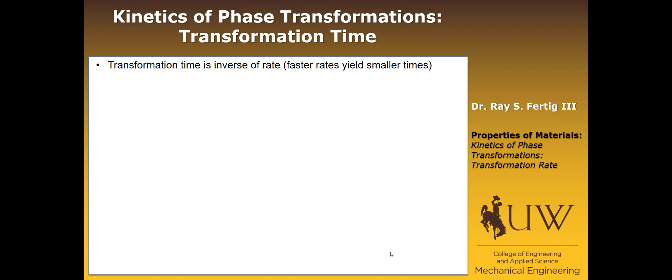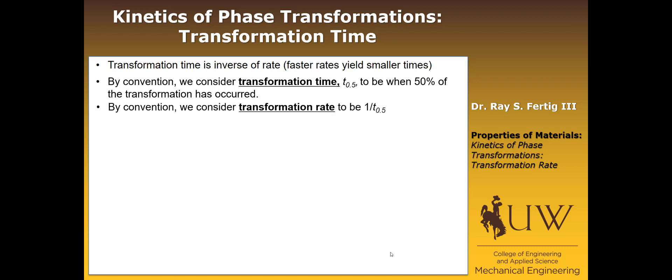We're going to define some conventions now. So by convention, we consider the transformation time, and we call it T_0.5, to be when 50% of the transformation that's going to occur has occurred. And also by convention, we consider the transformation rate to be the reciprocal of the transformation time.